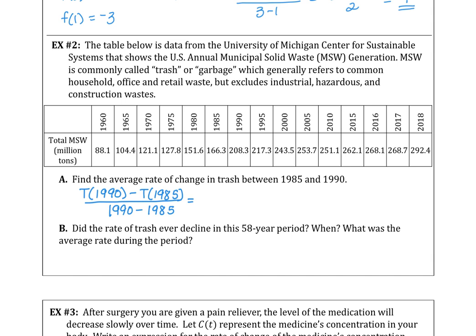In example 2 we're looking at the University of Michigan Center for Sustainable Systems that shows municipal solid waste generation. We commonly call that trash or garbage. It generally refers to common household, office and retail waste but it does not include industrial, hazardous, or construction waste. Our task in section A is to find the average rate of change in the trash from 1985, which is right here, to 1990, which is right here, so over that five year period.